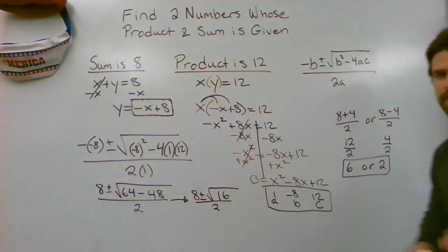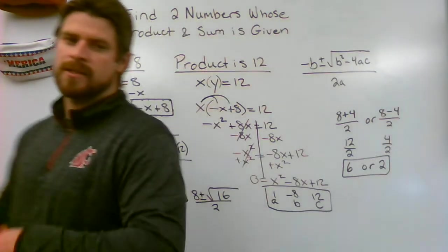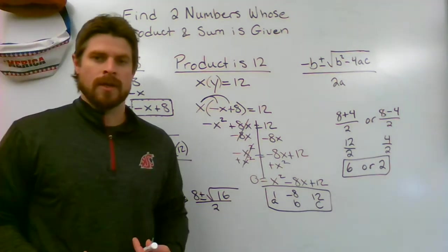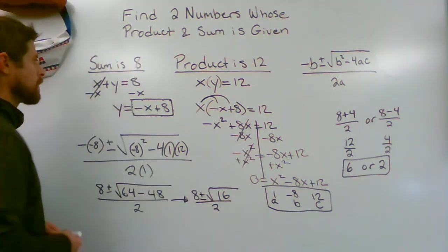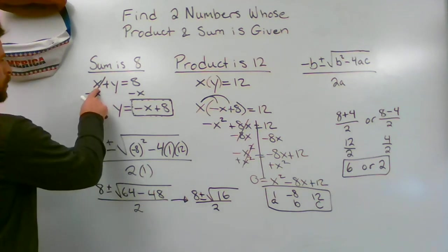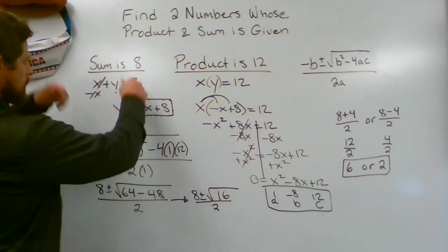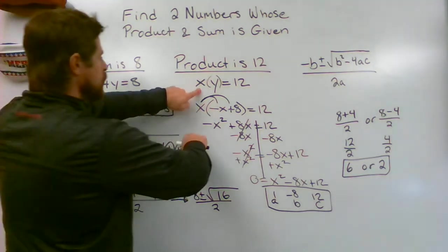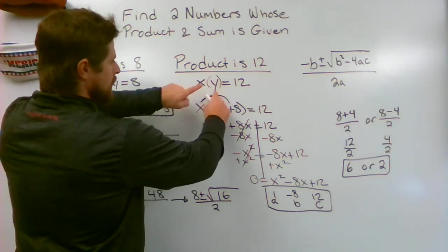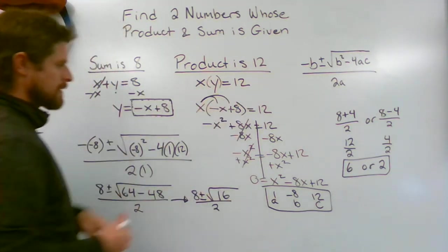There are my two possible answers for x. X could be a 6 or x could be a 2. Let's take a peek and make sure that it works before we finish. If I put a 2 and a 6 in, would they add up together and make 8? Yes. If I put a 2 and a 6 in, would they multiply together and make 12? Yes.